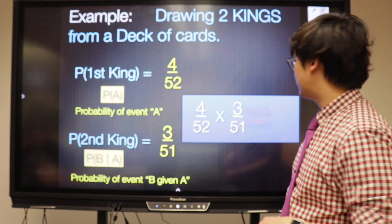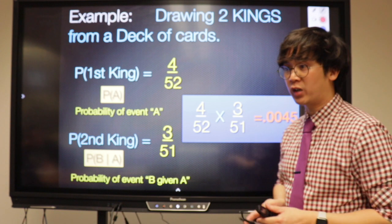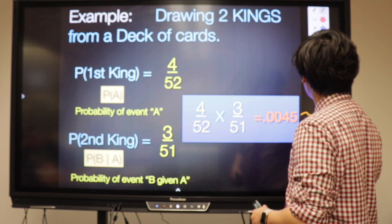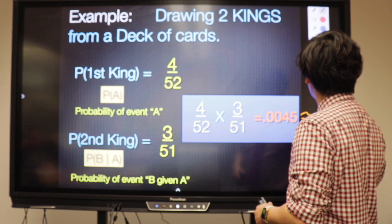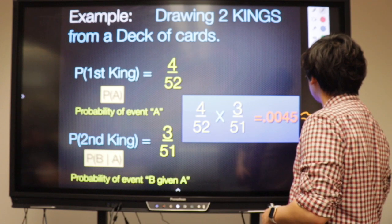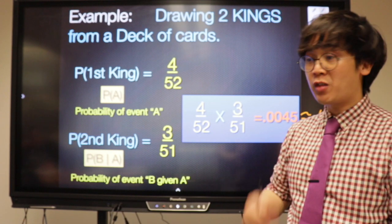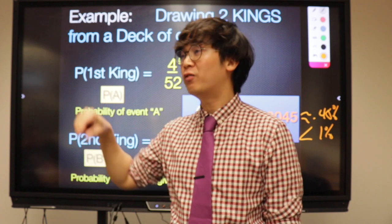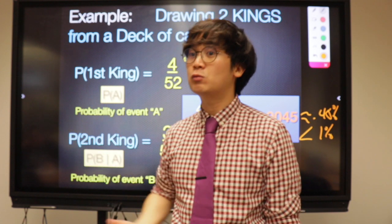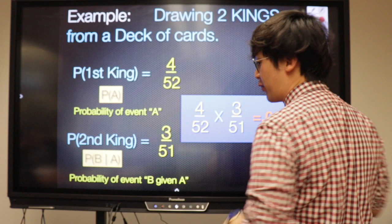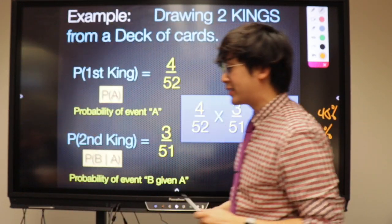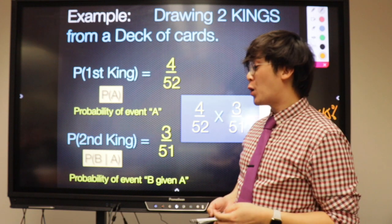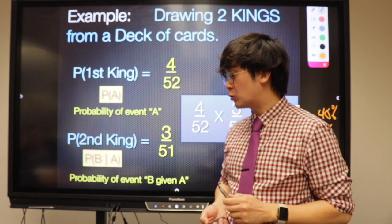So 4/52 times 3/51 gives a big number in fraction form, but in decimal form it's 0.0045, which is 0.45%. It's not even 1%. So the probability of drawing two kings from a standard deck of cards is really, really small.